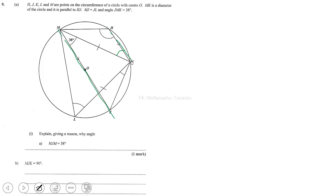So we want to explain why angle HJM, this angle over here, is equal to 38 degrees. We can see that line MK and line HJ are parallel lines. So because of that, we have an alternate interior angle created here and here. Alternate interior angles are congruent — that's the reason why angle HJM is also 38 degrees.